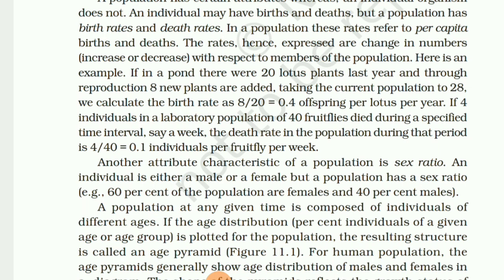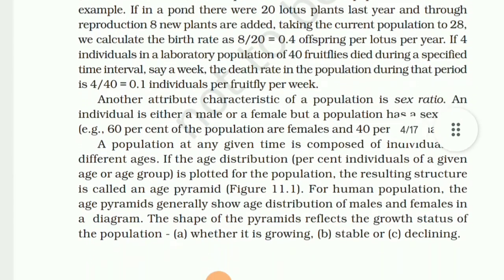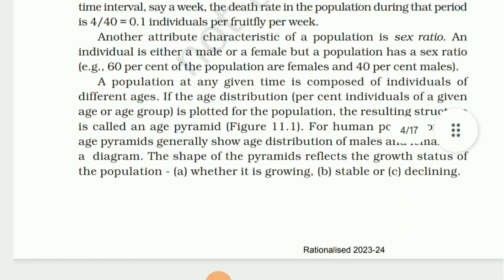A population has certain attributes that an individual organism does not. An individual may have birth and death, but a population has birth rate and death rate. In a population, this rate refers to per capita birth and death — expressed as change in number with respect to members of the population. For example, if a pond has 20 lotus plants and 8 new plants are added, the birth rate is 8/20 = 0.4 per lotus per year. If 4 individuals in a laboratory population of 40 fruit flies died in a week, the death rate is 4/40 = 0.1 individual per fruit fly per week.